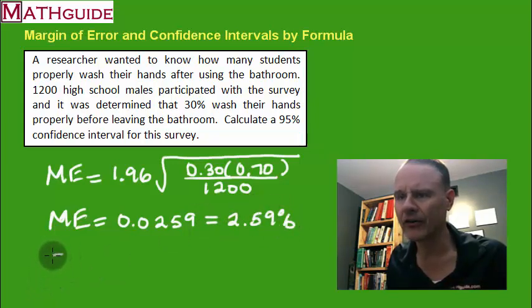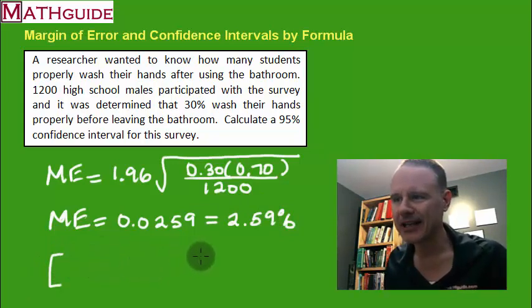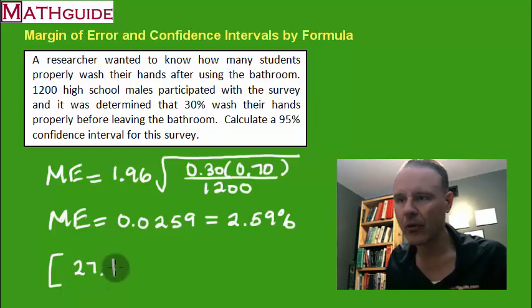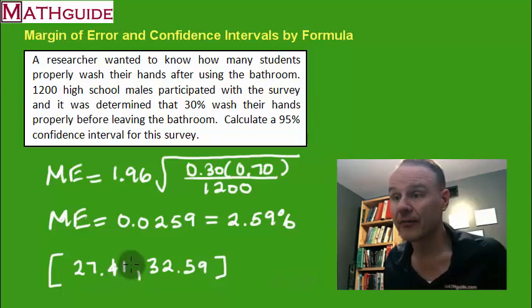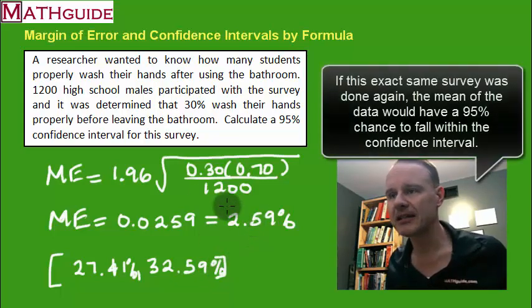What does this mean? It means 2.59 percent. Now what we're going to do is calculate the confidence interval. We're going to take 30 minus 2.59 and that is 27.41, and we're going to take 30 plus 2.59 and I'm getting 32.59 percent.